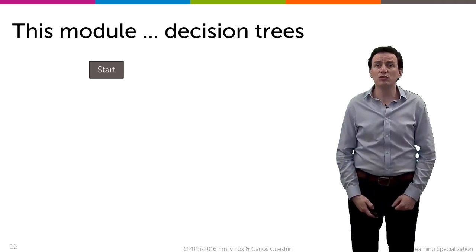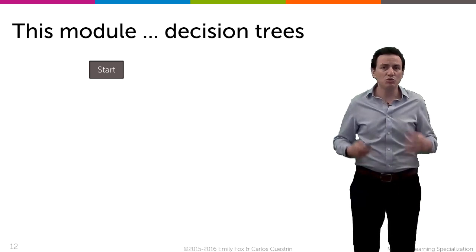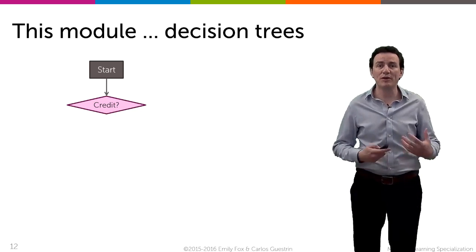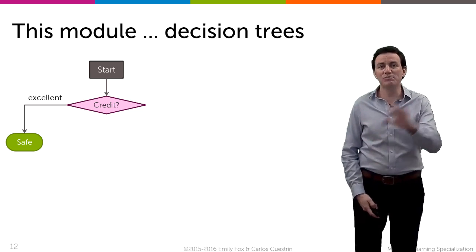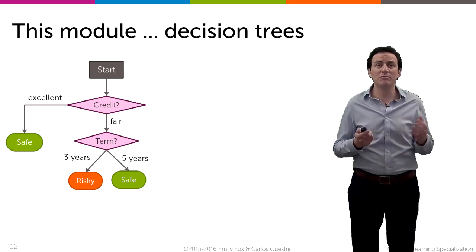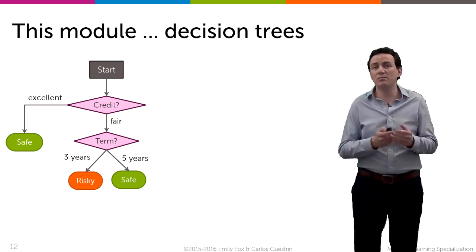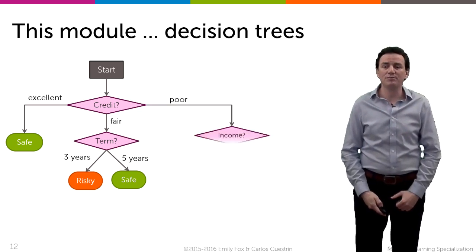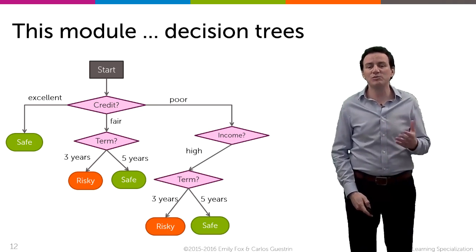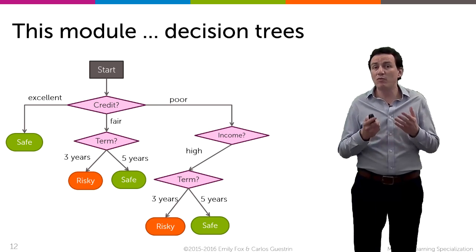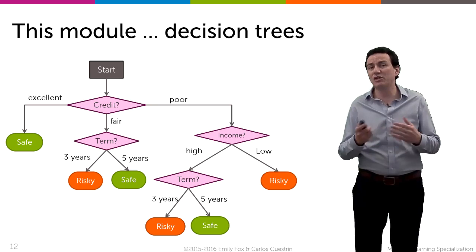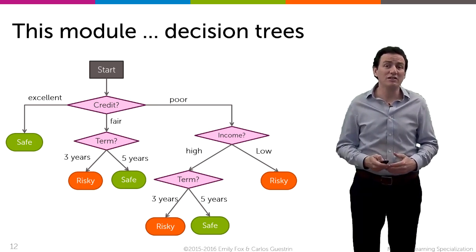In this module we're going to use a decision tree classifier, which might look a little bit like this. You start with the application and look at a particular feature of the input — let's say what my credit has been like. If my credit has been excellent, I just make the loan without looking at any other information. But if my credit has been only fair, I look at the term of the loan: if the loan is short maybe it's too risky, but if the loan is long maybe I'll take enough time to pay it off. Now if my credit is poor, I look further at what my income is. Even if my credit in the past has been poor but I make a lot of money, maybe I'm willing to make a long-term loan. But if you don't make that much money and your credit is poor, then no loans for you.